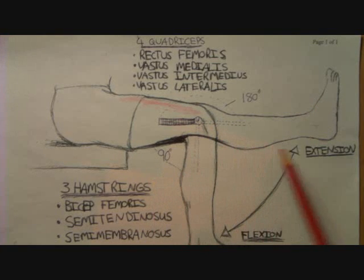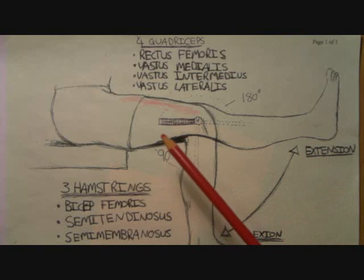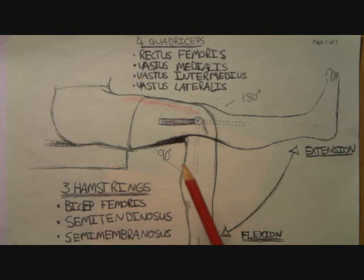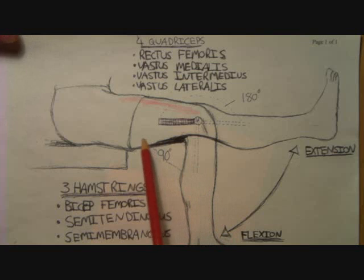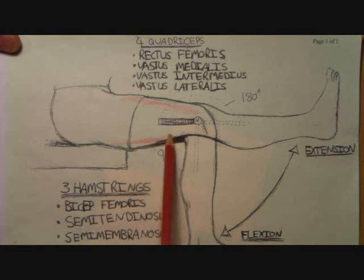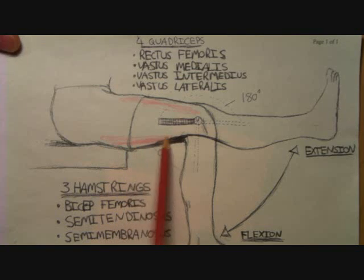There are three hamstrings that cause flexion. When they contract, they pull the leg back and decrease the angle of this joint. The three hamstring muscles are the bicep femoris, the semitendinosus, and the semimembranosus. Those muscles are located in the back of the thigh.